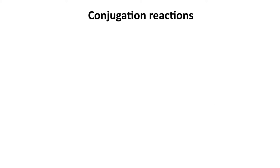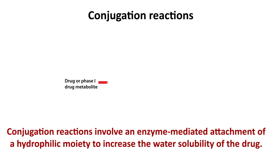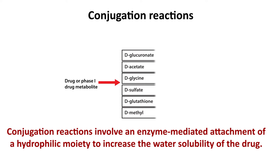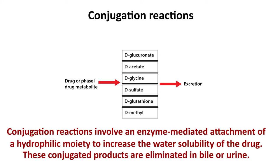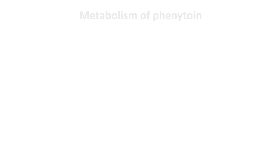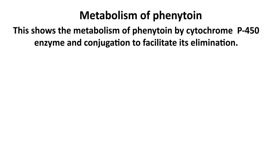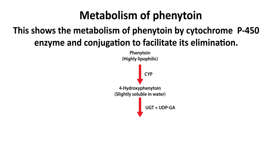Conjugation reactions involve an enzyme-mediated attachment of a hydrophilic moiety to increase the water solubility of the drug. These conjugated products are eliminated in bile or urine. This shows the metabolism of phenytoin by cytochrome P450 enzyme and conjugation to facilitate its elimination.